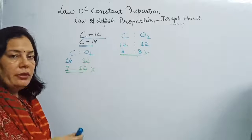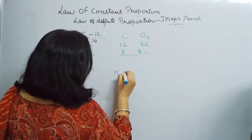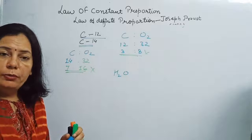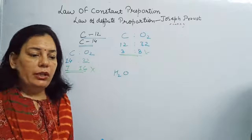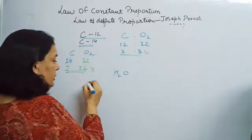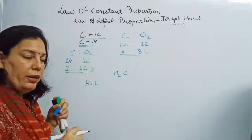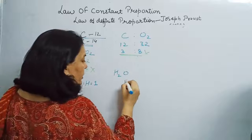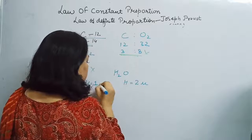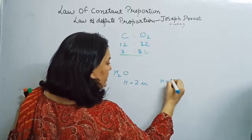The formula of water is H2O. Hydrogen is present in three isotopic forms in nature: H-1 (protium) with atomic mass 1 unit, H-2 (deuterium) with atomic mass 2 units, and H-3 (tritium) with atomic mass 3 units.